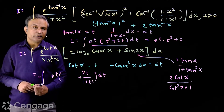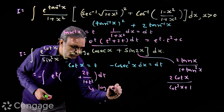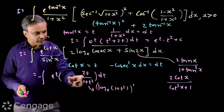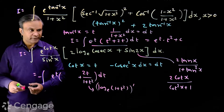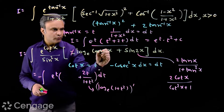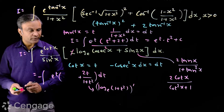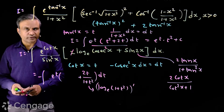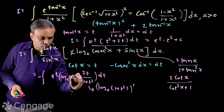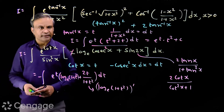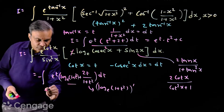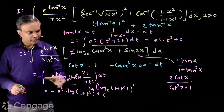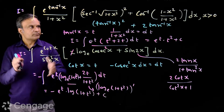Now, 2t/(1 + t²) is the derivative of log(1 + t²). And 2log(cos x) = log(cos²x). Since cosec²x = 1 + cot²x and cot x = t, this becomes log(1 + t²). So inside the bracket we have log(1 + t²) and its derivative 2t/(1 + t²) — this is the f(t) and f'(t) pattern. The answer is −e^t × log(1 + t²) + C. Substituting back t = cot x gives the final result.